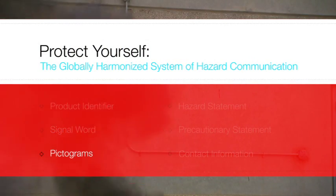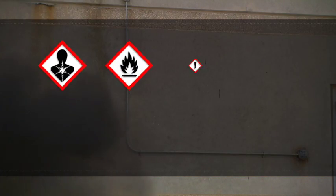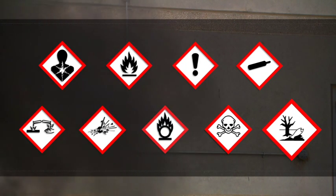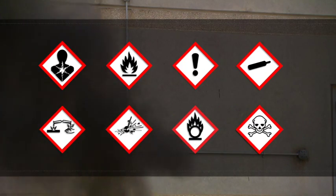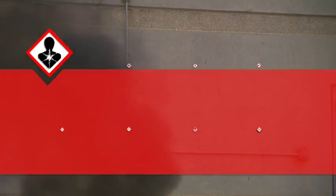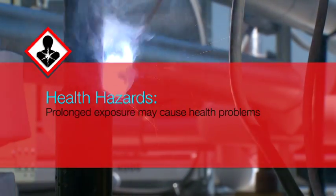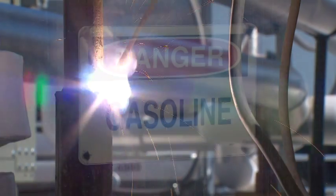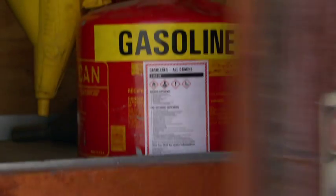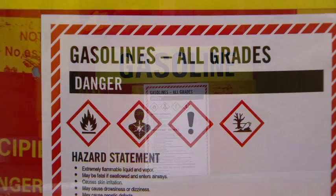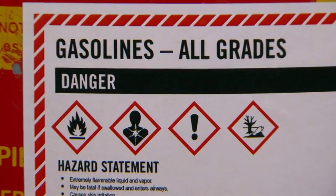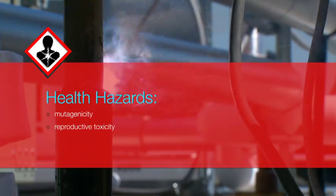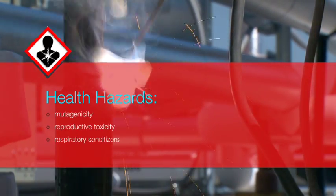A pictogram is a symbol that gives you specific information about the hazards of a chemical. There are a total of eight pictograms required for worker safety on labels and safety data sheets. There's a ninth pictogram for the environment, but it doesn't apply to workplace safety. The first pictogram is for health hazards. Prolonged exposure to chemicals covered by this pictogram may cause health problems such as cancer and birth defects. An example is gasoline — the benzene ingredient is a known carcinogen. Keep in mind, a single chemical or chemical mixture may have more than one pictogram. This pictogram also covers mutagenicity, reproductive toxicity, respiratory sensitizers, target organ toxicity, and aspiration toxicity.